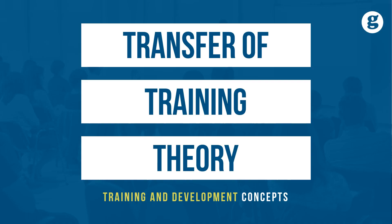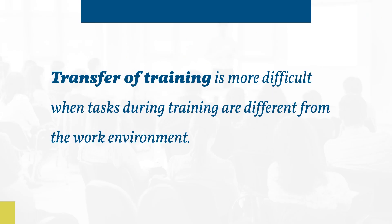Transfer of training is more likely to occur when the trainee works on tasks during training — like knowledge, equipment, or processes — that are very similar, if not identical, to the work environment, known as near transfer. Transfer of training is more difficult when tasks during training are different from the work environment, known as far transfer.